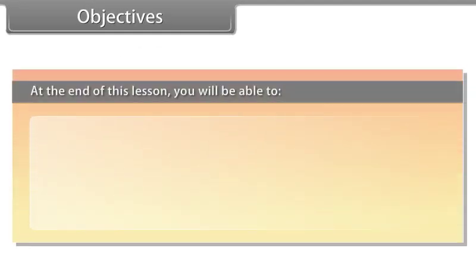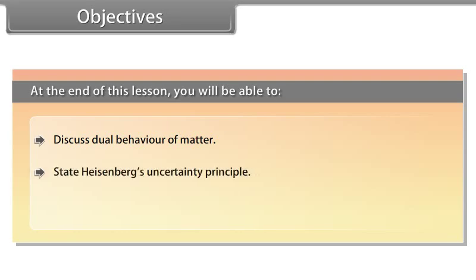At the end of this lesson, you will be able to: discuss dual behavior of matter, state Heisenberg's uncertainty principle, and describe the quantum mechanical model of atom.